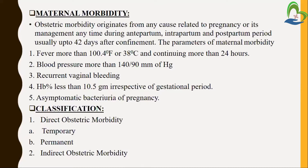Blood pressure more than 140/90 mmHg — if blood pressure keeps rising during the whole phase of pregnancy, it can cause maternal morbidity. Then recurrent vaginal bleeding: if the mother has a problem with vaginal bleeding during the pregnancy phase, it may be a major risk. Hemoglobin level less than 10.5 grams per dL, irrespective of the gestational period — a low hemoglobin level is a risk for the mother as well as the baby. Also, symptomatic bacteriuria of pregnancy — unknown cause of bacterial infection during the pregnancy phase. These are all the parameters responsible for maternal morbidity.